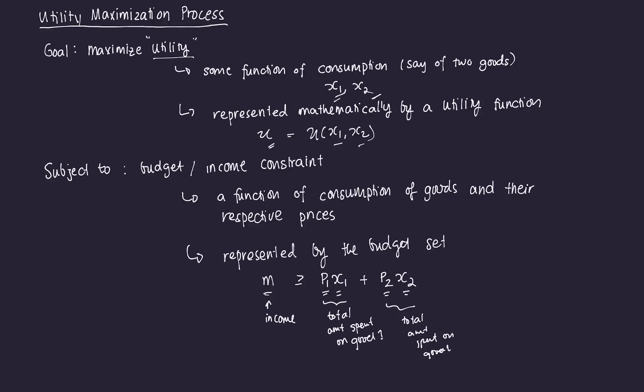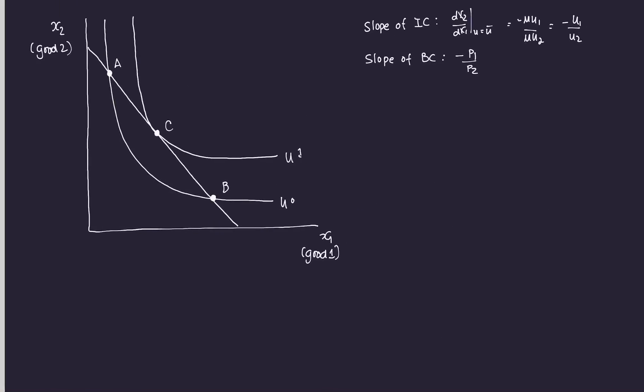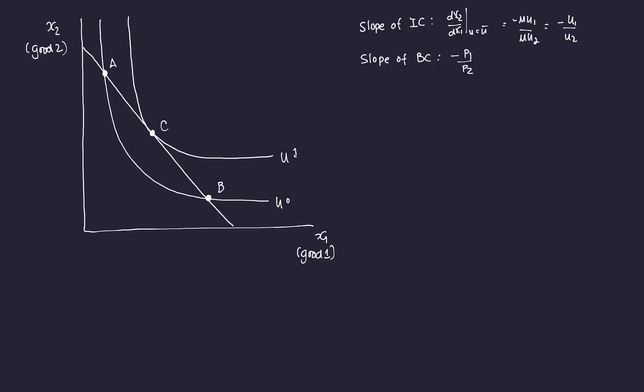In order for a consumer to maximize their utility — which is some function of consumption — they need to consider their budget or income constraint. Here we have our indifference curve and budget line graph. On the y-axis we have X2, on the x-axis we have X1. We have two indifference curves, and if you remember from basic economics, an indifference curve is some representation of a level of utility. Points along the same indifference curve will give you the same utility.